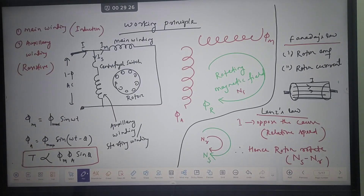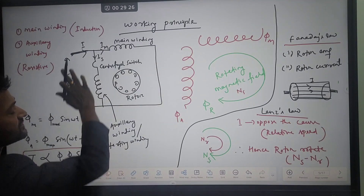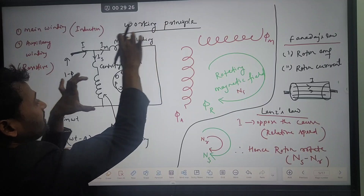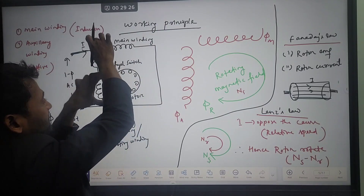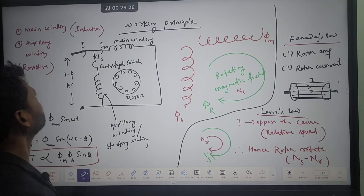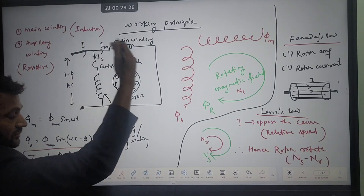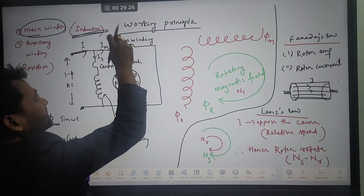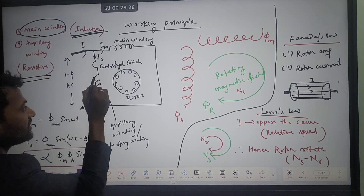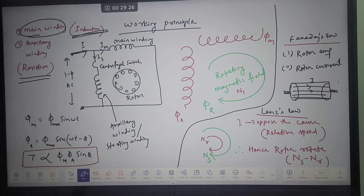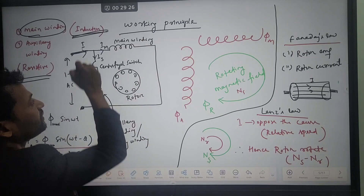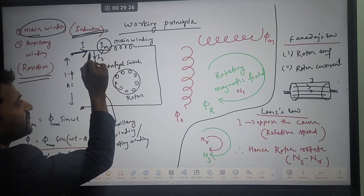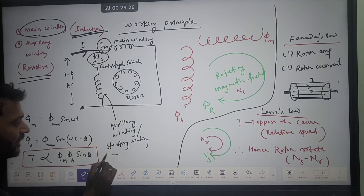Coming to the working principle: looking at the circuit diagram, the stator has two windings — main winding and auxiliary winding — connected such that the electrical angle between them is 90 degrees. The main winding has high inductance — it is a highly inductive coil — and the auxiliary winding has high resistance. Single-phase supply is given to the stator winding, and the input current divides: Im through the main winding and Is through the auxiliary winding.